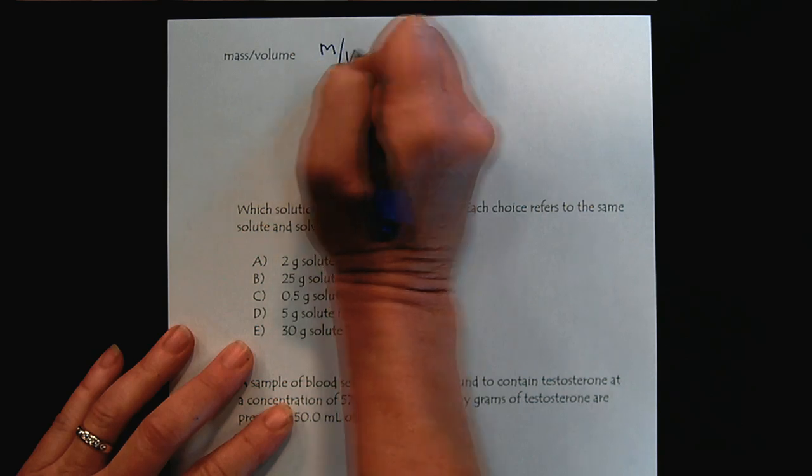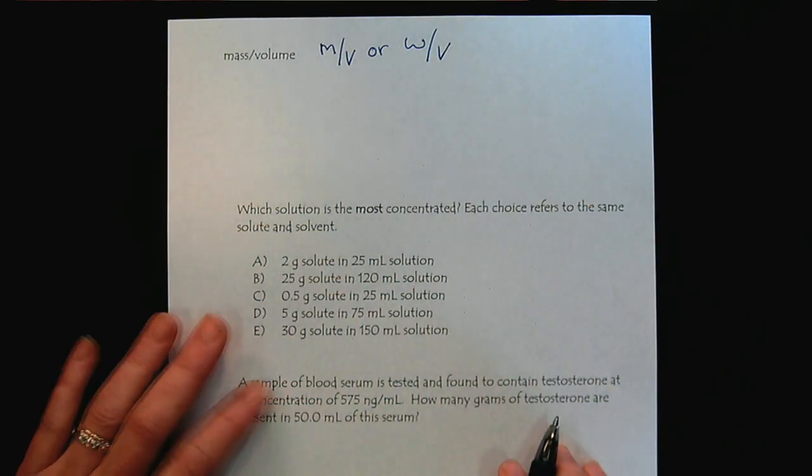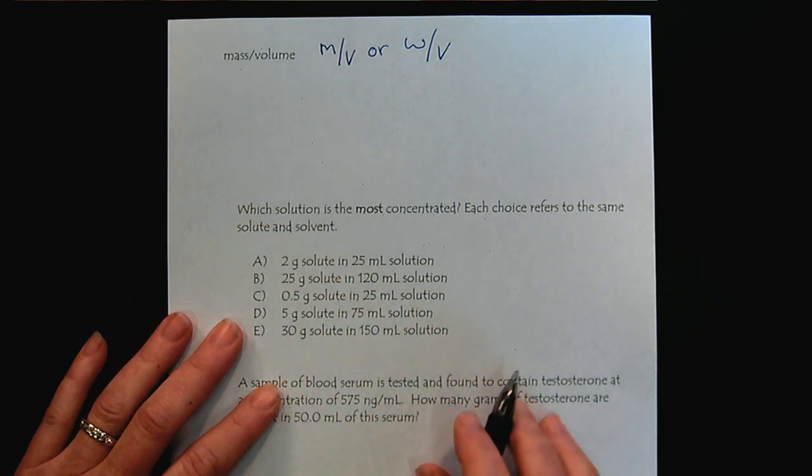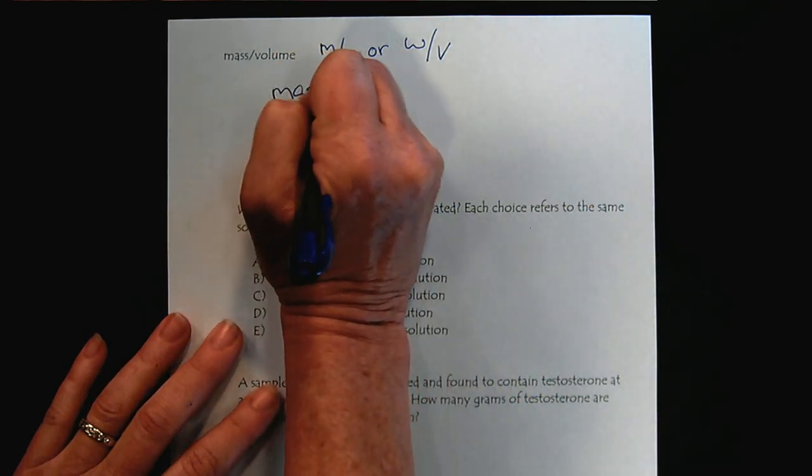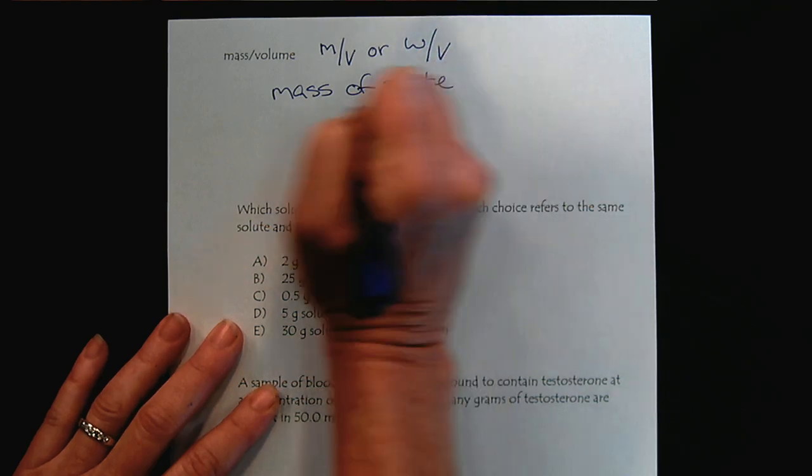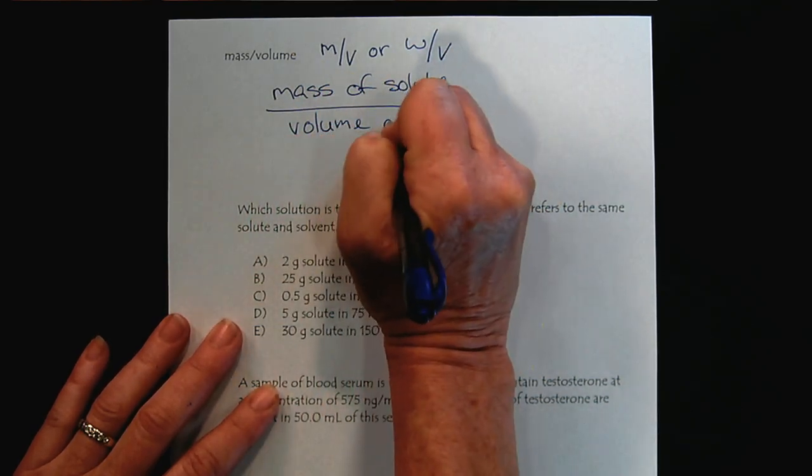Welcome to the video tutorial for mass over volume solution concentrations. Mass over volume is written as m/v or weight over volume. This is an important concentration unit. Remember that it's the mass of the solute over the volume of the solution.